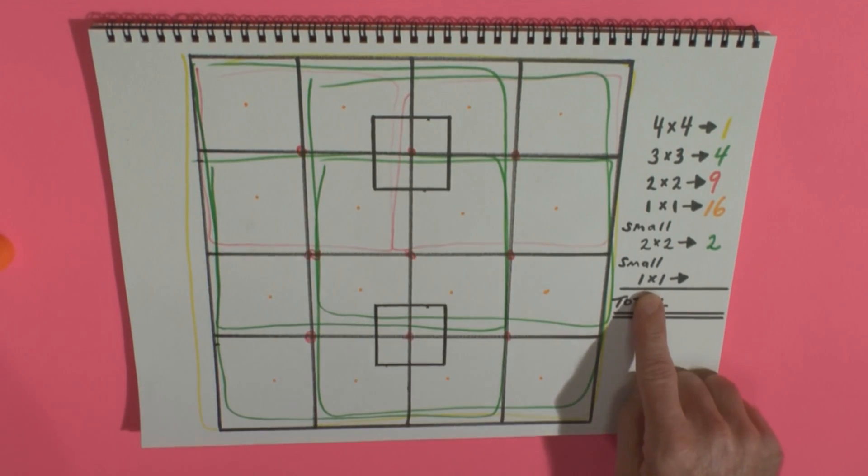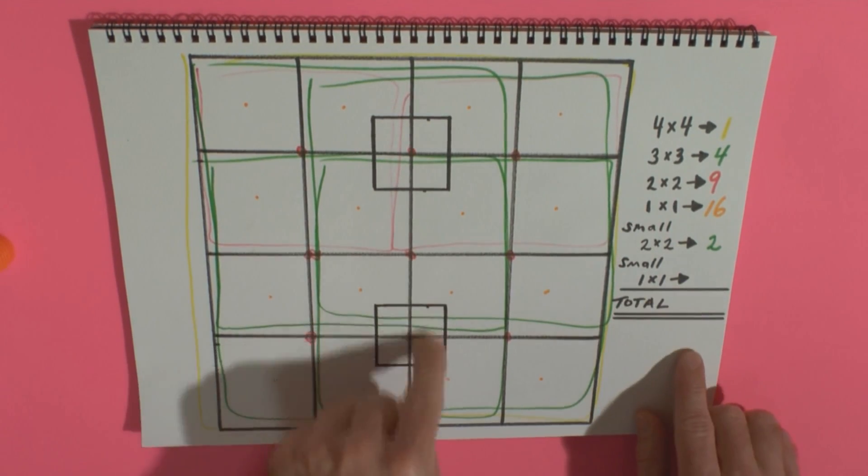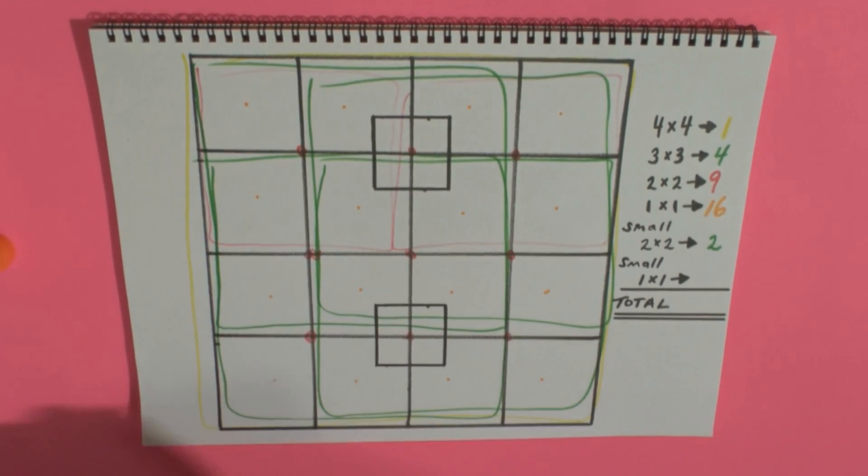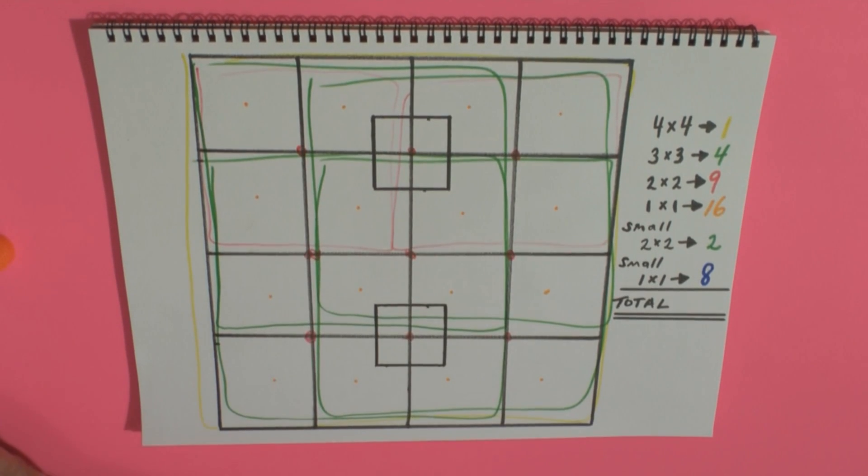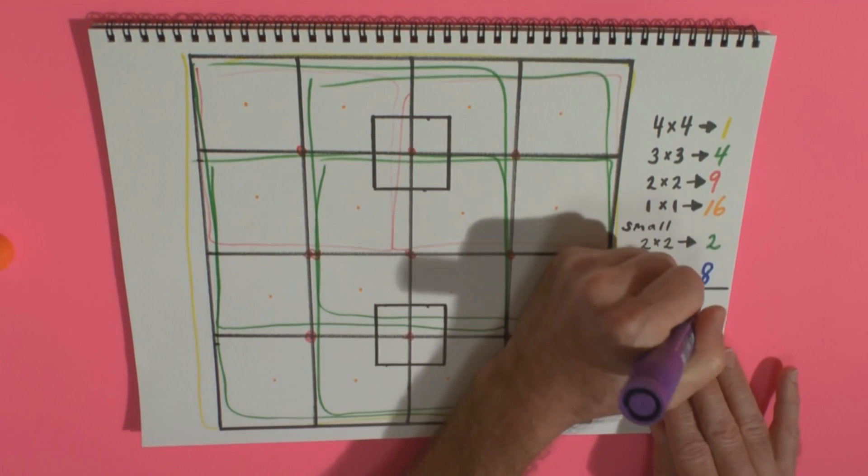And small one by one squares are the guys in the middle. One, two, three, four, five, six, seven, eight. So eight there. Total all these up. And the grand total is 40.